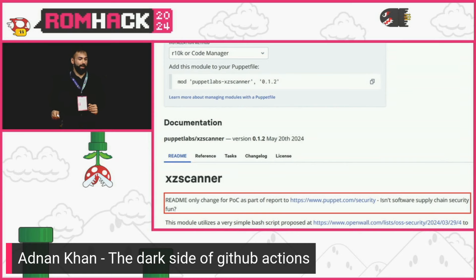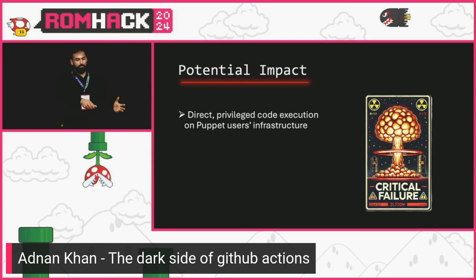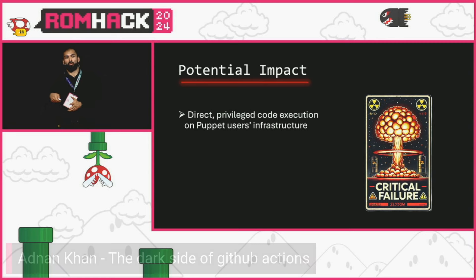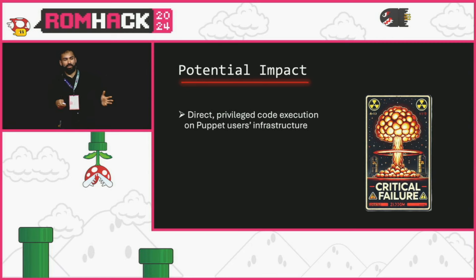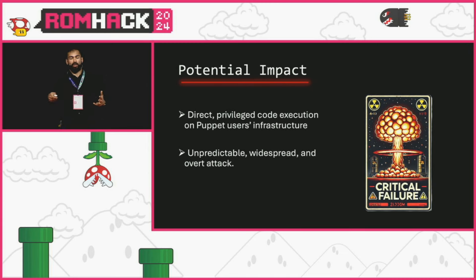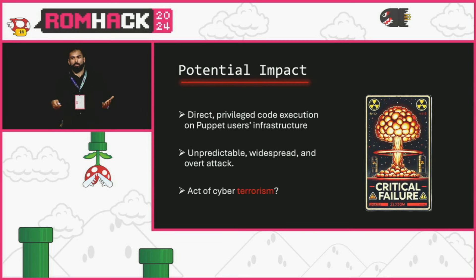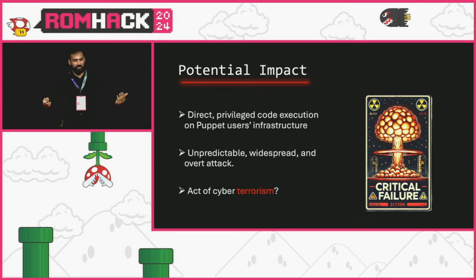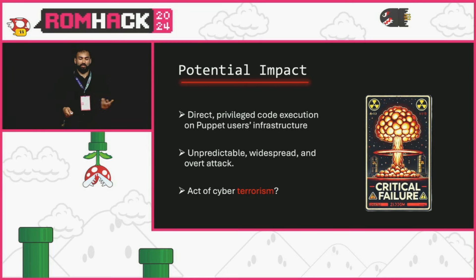It worked — I was able to prove I could backdoor every single PuppetForge module with that API token. Any company using Puppet for automation that's pulling modules from PuppetForge — especially if pulling by the latest tag — would mean I could get direct access to their infrastructure and deploy ransomware or pretty much whatever I wanted. This attack would be very widespread and hard for anyone to control, because that's just the nature of supply chain attacks.